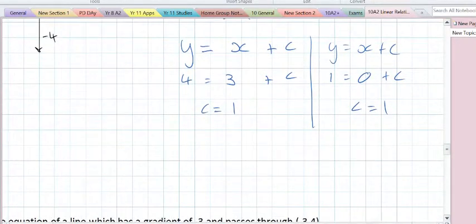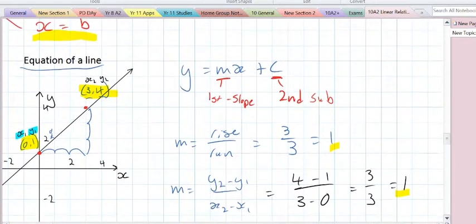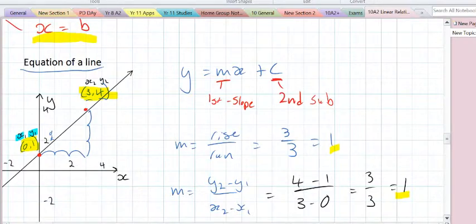Now our equation is y equals 1x plus 1. So a simple one to start, but the process is what's important. We find m first, which is our slope, then we find c through substitution.